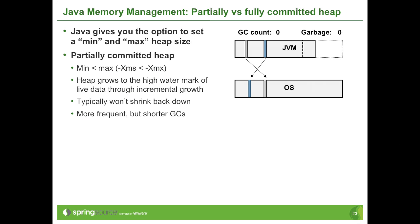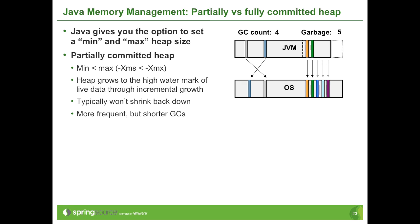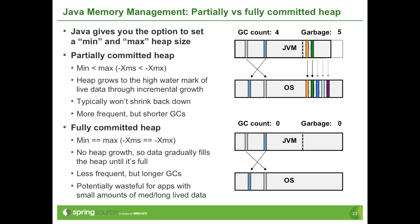Starting with the partially committed heap: the JVM allocates some memory, then some more, and the heap is already full. Before expanding, the JVM does a garbage collection and collects one piece of garbage. The newly allocated memory writes over the old garbage, and soon the heap is full again, triggering another garbage collection. Eventually the heap reaches its high watermark size. Replaying the same scenario with a fully committed heap, objects are allocated and some become garbage, but since a garbage collection hasn't yet occurred, the garbage hasn't been cleaned up.